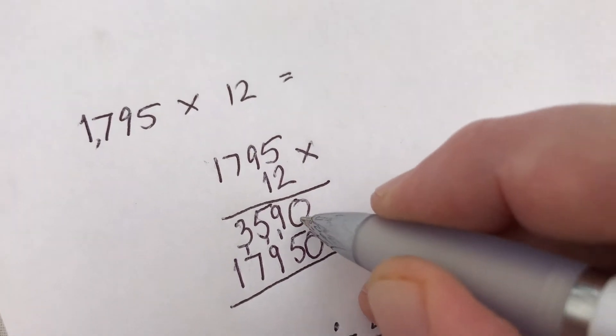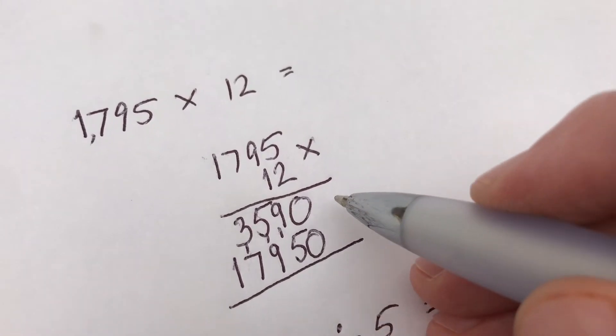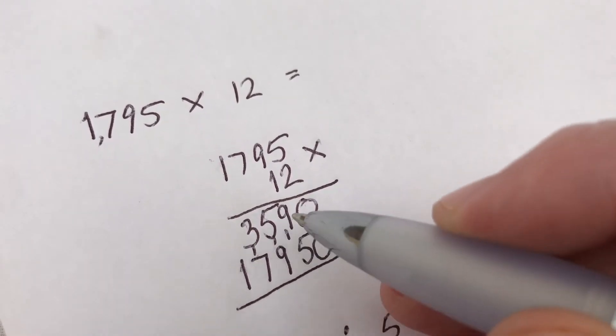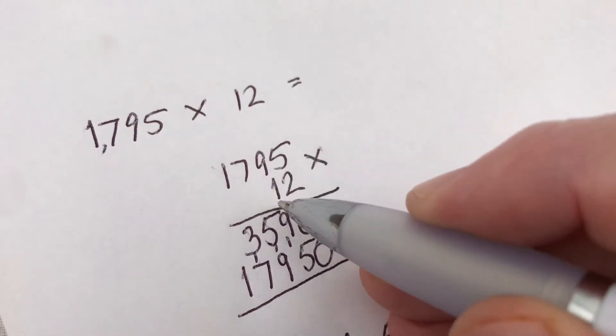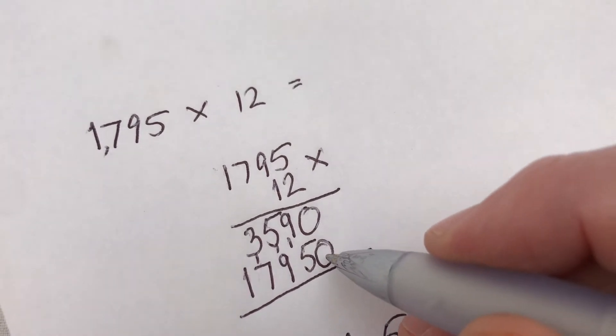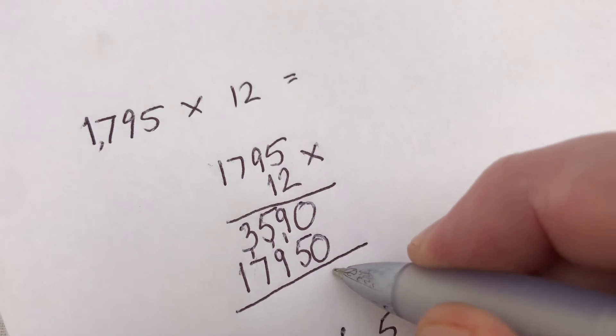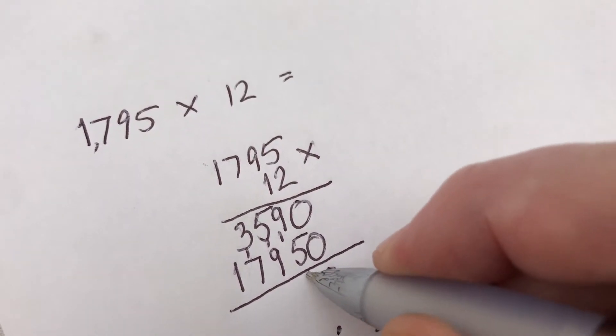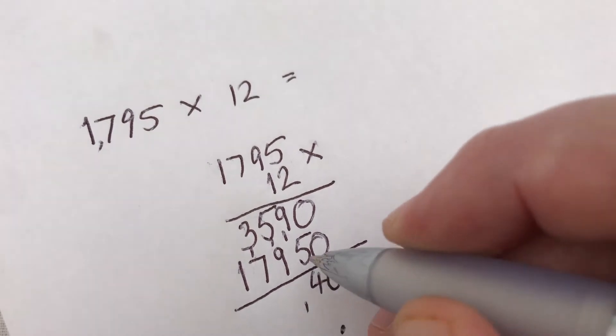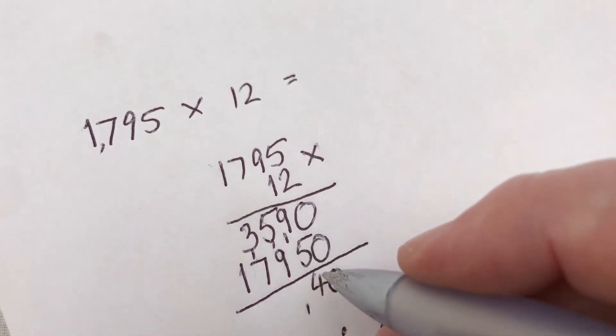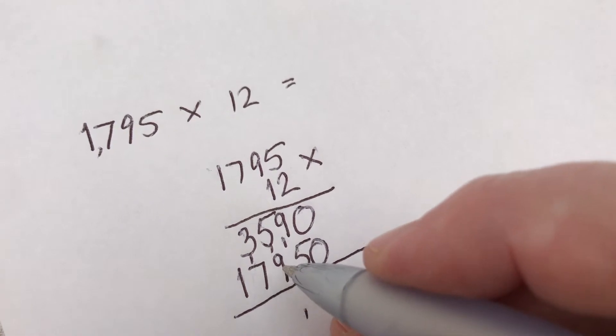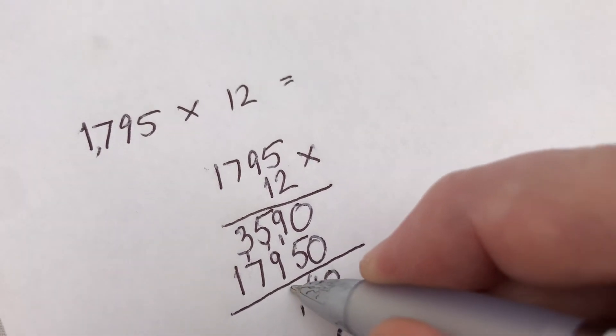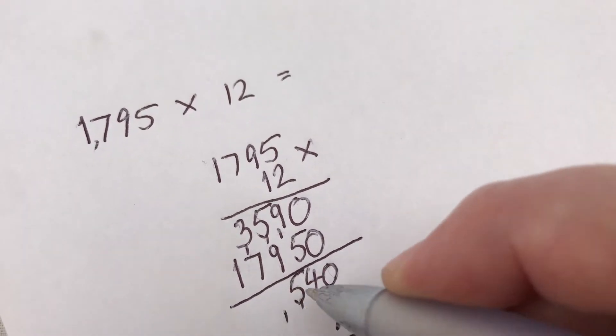We draw a line under that, and we're going to add these two together. So if the units plus the tens units, we've done the 12. So it's 0 plus 0 is 0. 9 plus 5 is 14, so put the 4, carry the 1. 5 plus 9 is 14, plus the 1 there is 15, so put the 5, carry the 1.